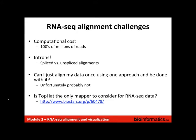Introns are another challenge. In comparison to DNA alignments, you quite often have spliced alignments, especially in eukaryotic organisms. The aligner has to handle the fact that the read might suddenly jump from one part of the genome to another part tens of thousands of bases away.